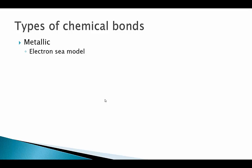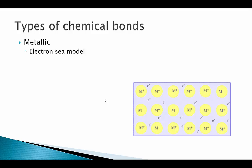So when metal atoms get together to bond, they just kind of give up their valence electrons. We imagine that the metal atom gives up its valence electron and is left with a positively charged core, and the valence electron is pretty much free to move around wherever it wants. The force that holds this whole structure together is the electrostatic attractive force between these positively charged cores and the negatively charged electron sea that acts like a glue. That's the electron sea model.